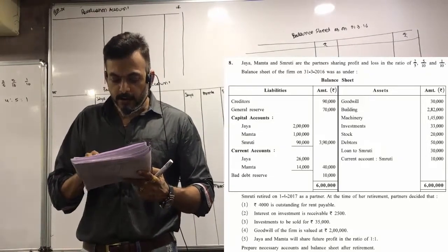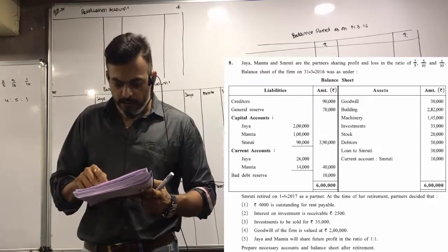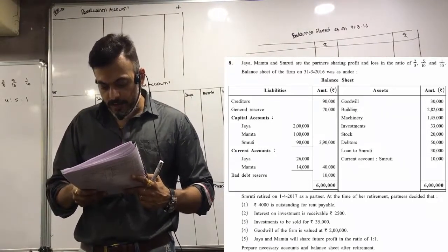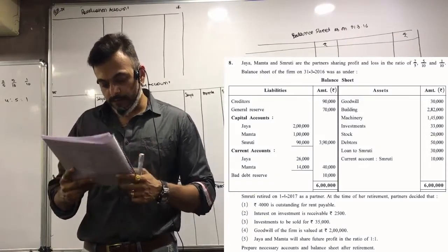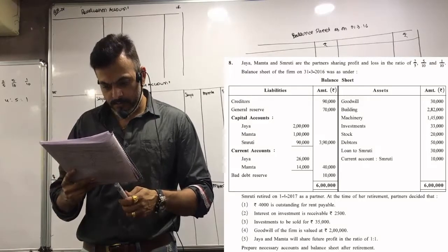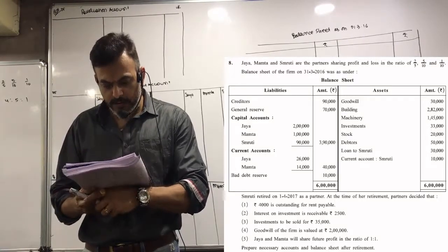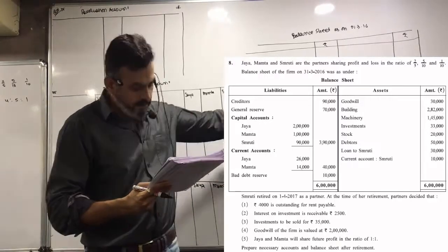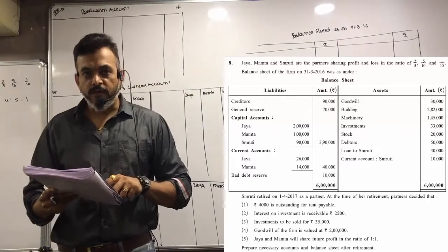Now Smriti is retiring. The loan will be transferred to her current account. Smriti retired on 1-4-2016. There is a mistake in the dates given — if the balance sheet is 31-3-2016, then the retirement date should be 1-4-2016.